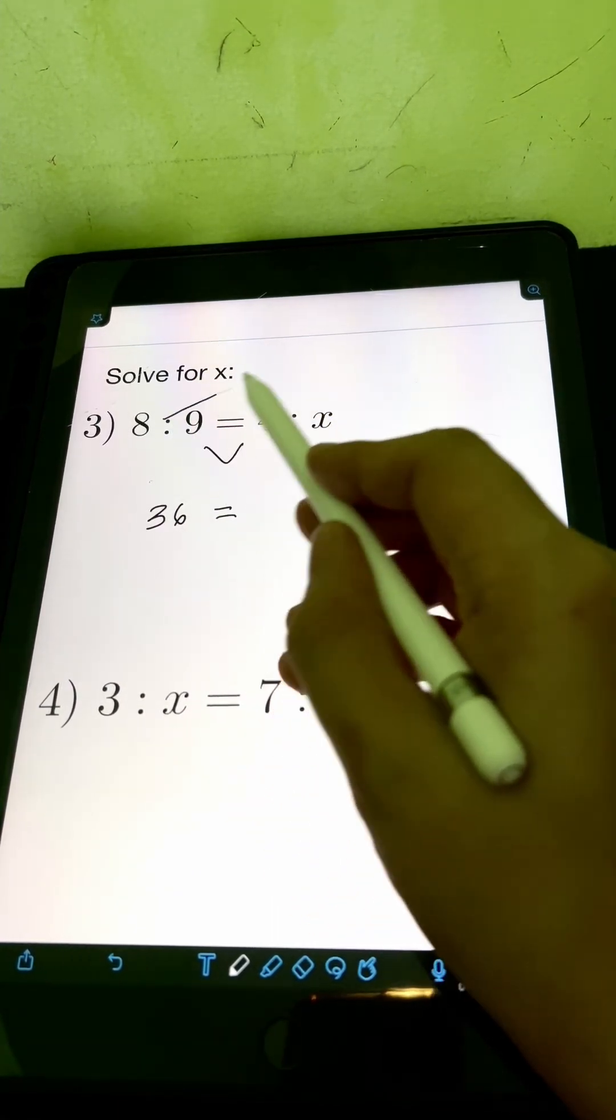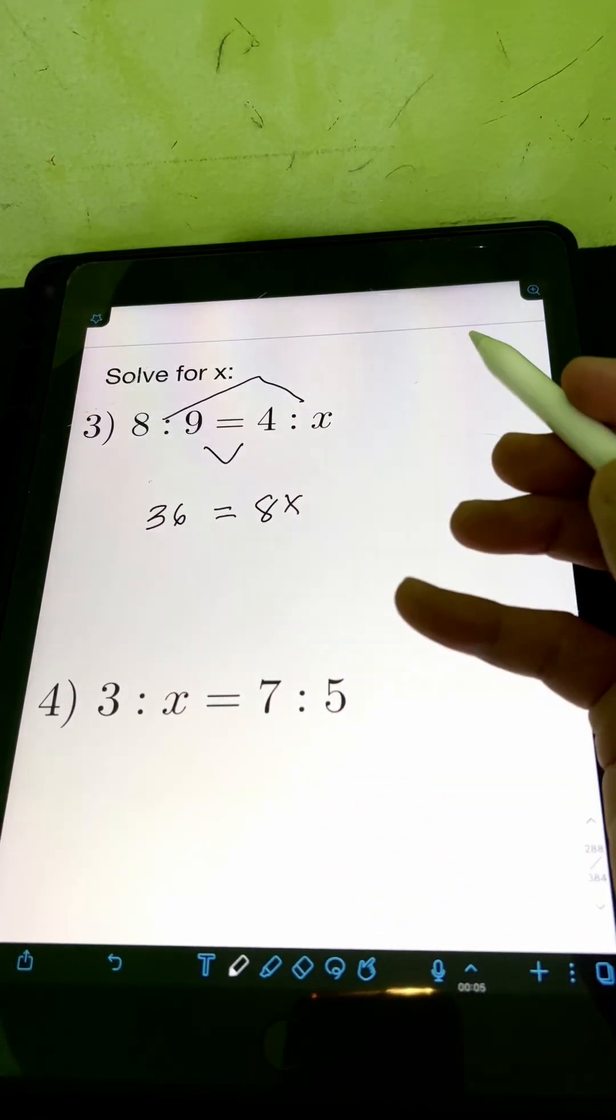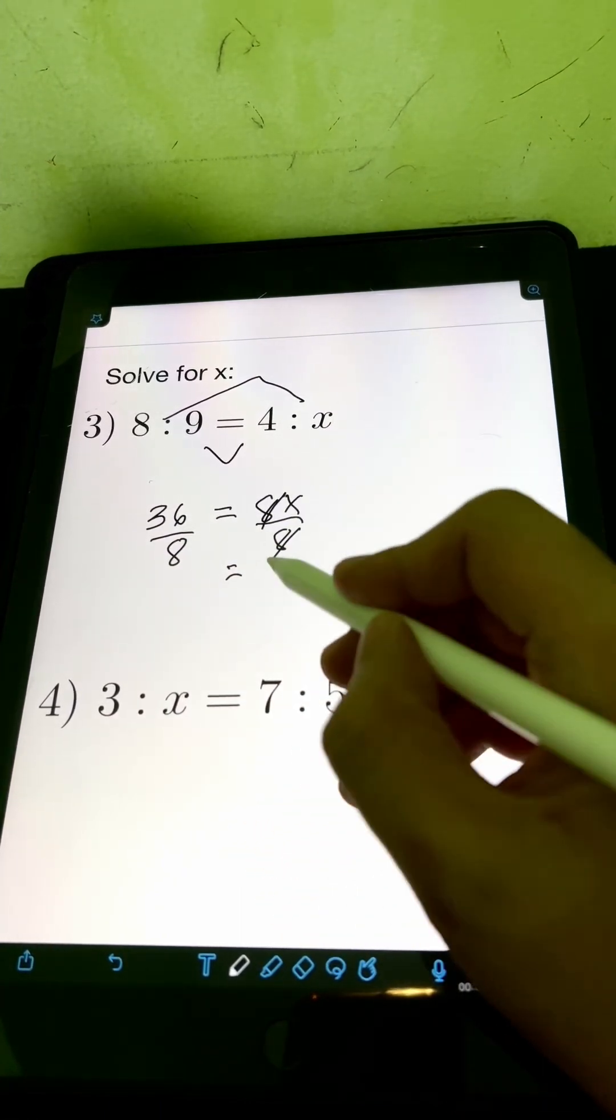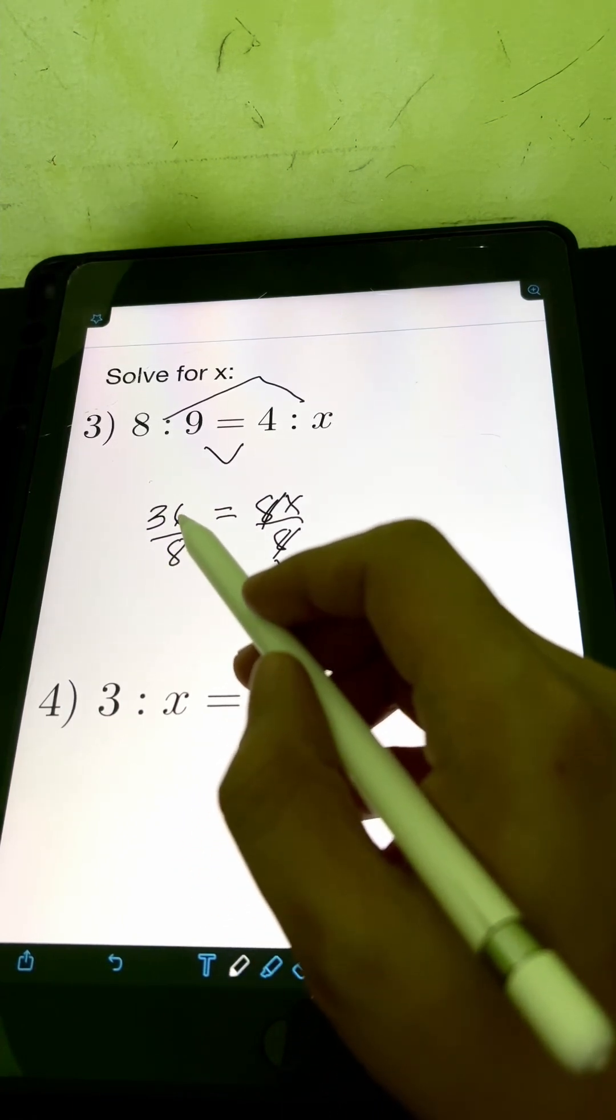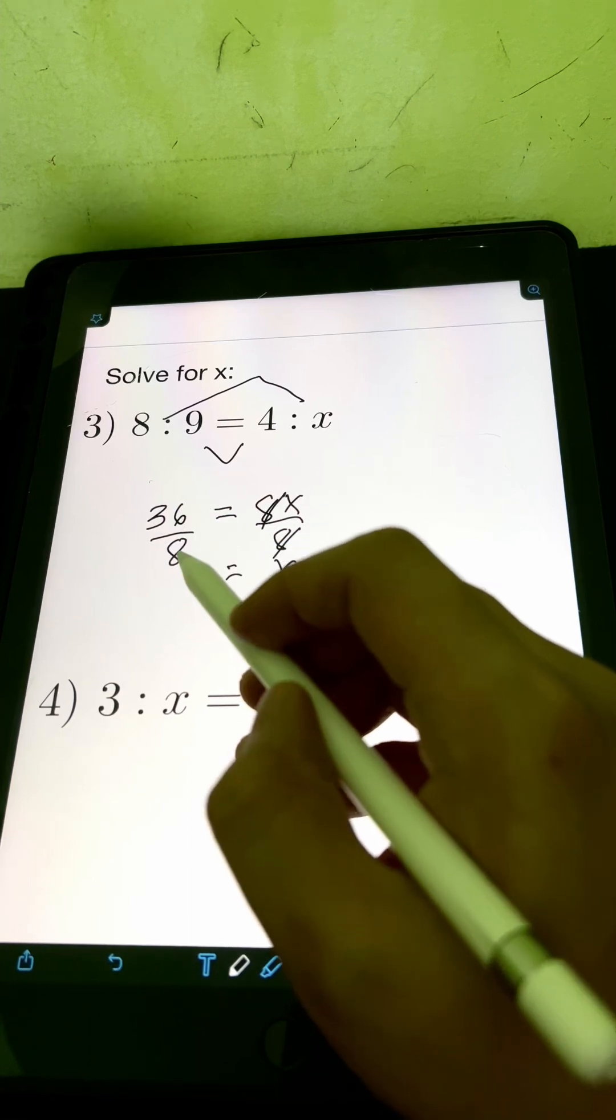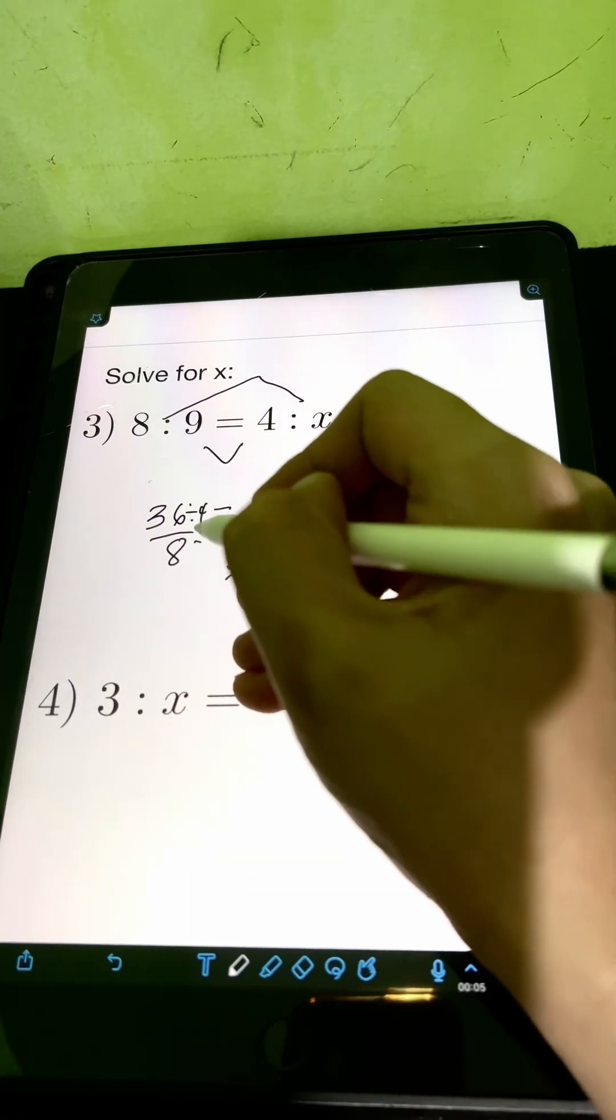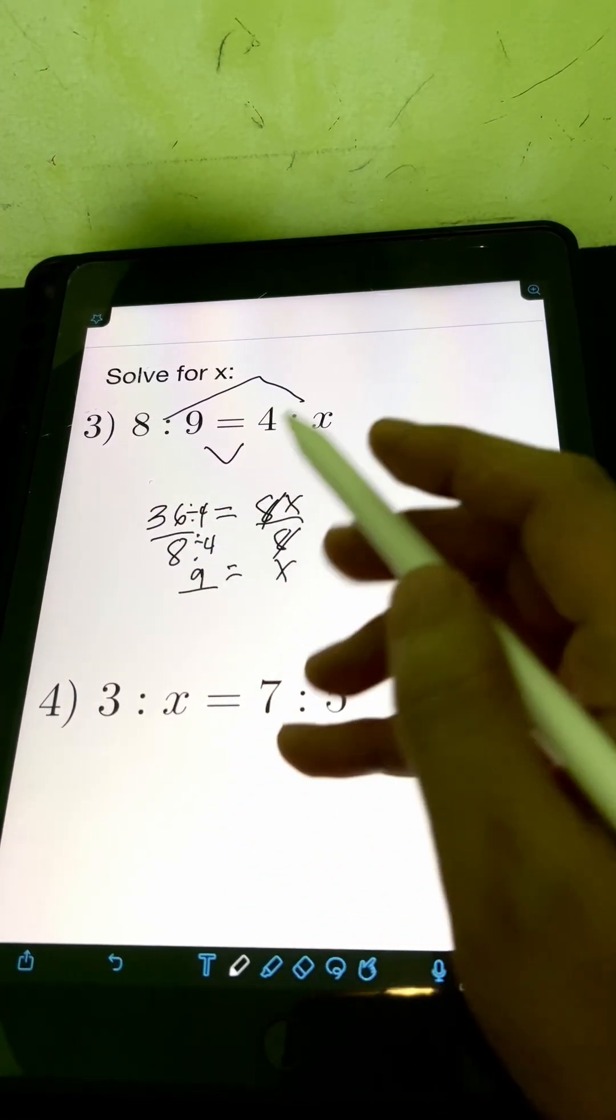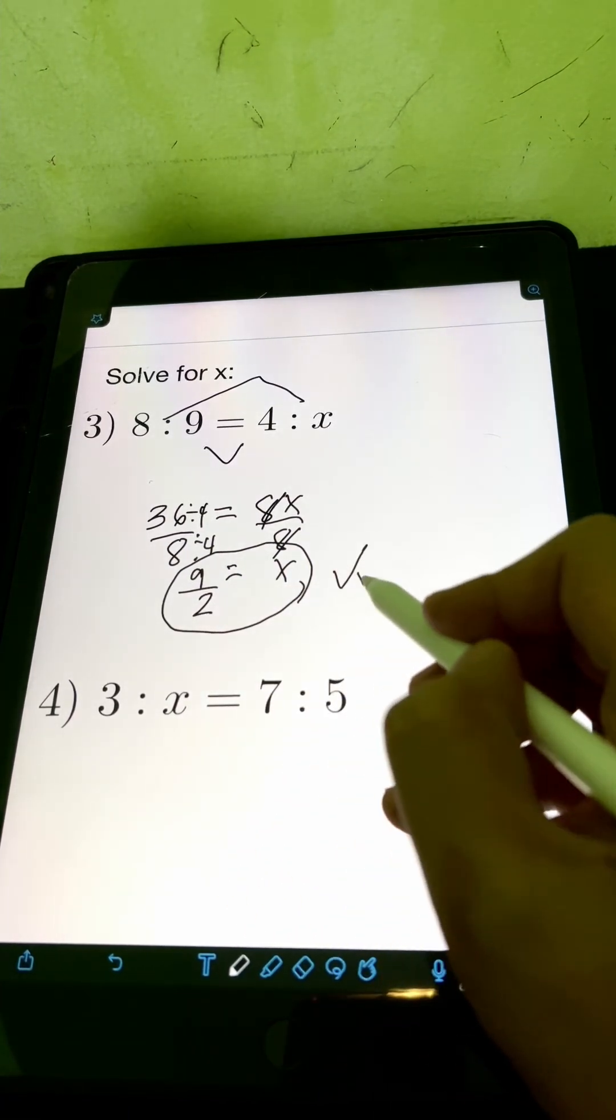equal to the product of the extremes, 8 times x or 8x. Then we can divide both sides by 8, cancelling out 8, x is equal to 36 divided by 8 or we can convert this into lowest term. So the GCF of 36 and 8 is 4. So divide both the numerator and denominator by 4. 36 divided by 4, that's 9, over 8 divided by 4, that's 2. So the value of x is 9 halves.